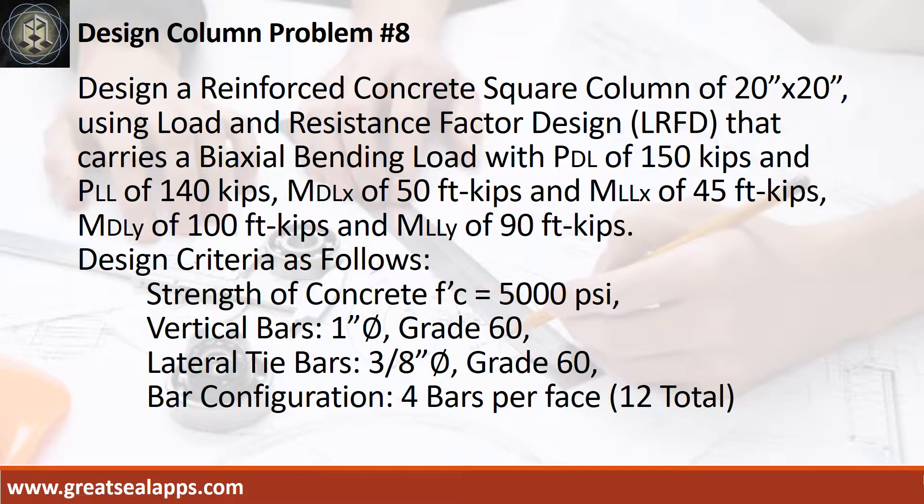Design a reinforced concrete square column of 20 inches by 20 inches using load and resistance factor design that carries a bi-axial bending load with axial dead load of 150 kips and axial live load of 140 kips, moment dead load at x-axis of 50 foot-kips and moment live load at x-axis of 45 foot-kips, moment dead load at y-axis of 100 foot-kips and moment live load at y-axis of 90 foot-kips.